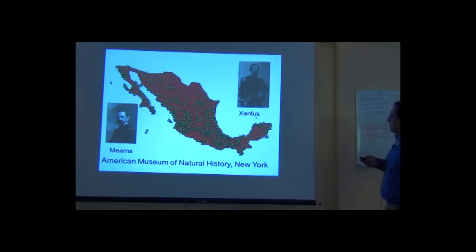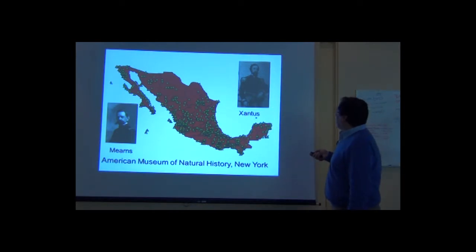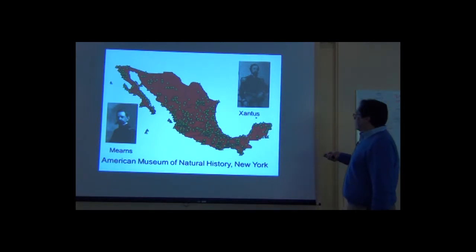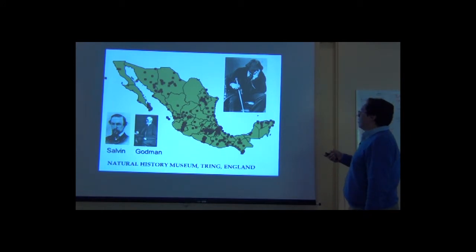The American Museum of Natural History in New York holds very old collections that date back to the time that we were in war against the United States. And they sent several military groups not to survey birds. They didn't want to collect birds, they wanted to collect Mexicans. But in this example, the American Museum has a long tradition of exploration in Mexico, several centuries. And it's reflected in the number of localities that are present. These are single localities for the collection.